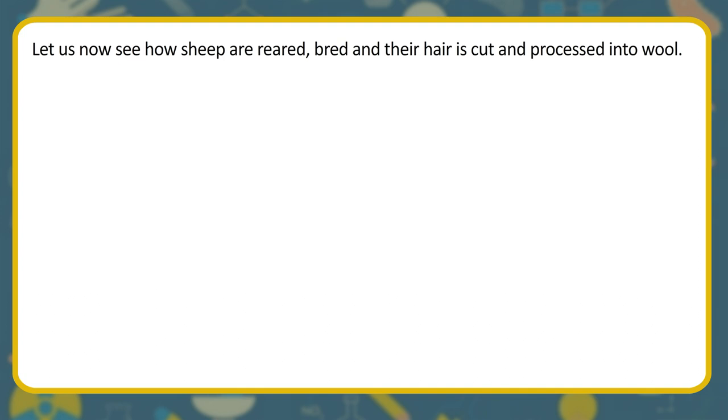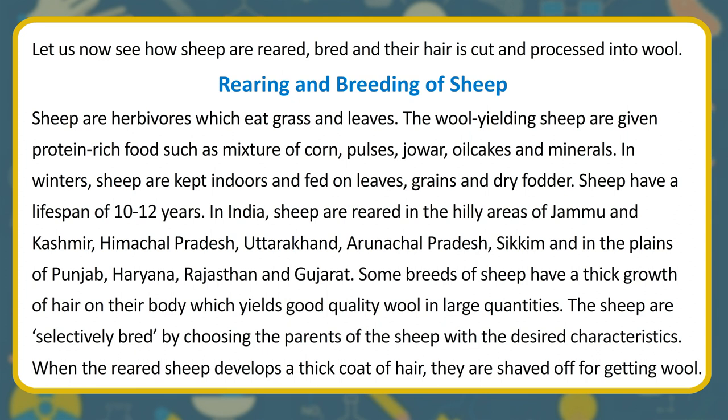Let us now see how sheep are reared, bred, and their hair is cut and processed into wool. Sheep are herbivores which eat grass and leaves. Wool-yielding sheep are given protein-rich foods such as a mixture of corn, pulses, oilcakes, and minerals. In winters, sheep are kept indoors and fed on leaves, grains, and dry fodder. Sheep have a lifespan of 10–12 years. In India, sheep are reared in hilly areas of Jammu and Kashmir, Himachal Pradesh, Uttarakhand, Arunachal Pradesh, Sikkim, and in the plains of Punjab, Haryana, Rajasthan, and Gujarat. Some breeds of sheep have a thick growth of hair which yields good quality wool in large quantities. The sheep are selectively bred by choosing parents with desired characteristics. When the reared sheep develops a thick coat of hair, it is shaved off for getting wool.